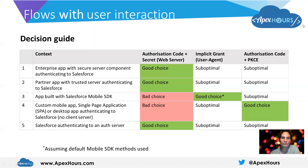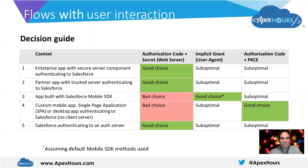Those four flows are all relevant to Salesforce acting as the authorization server. If Salesforce is authenticating to another authorization server, then generally the authorization code with secret — the web server flow — is the optimal choice. Salesforce is very capable of protecting a secret as long as that's configured appropriately, so the additional security benefits of that flow make it the right choice for that scenario.